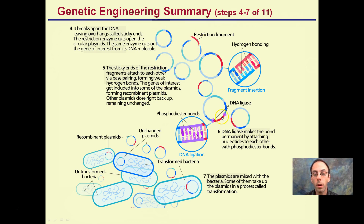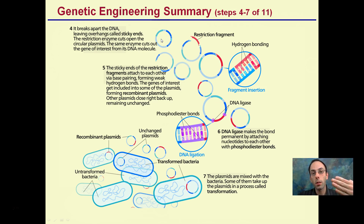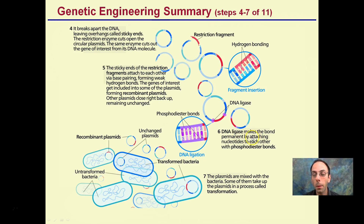The red here indicates the gene of interest. Some plasmids get separated by restriction enzymes and rejoined without taking in the gene of interest. DNA ligase links the bonds together, making them permanent by attaching nucleotides with phosphodiester bonds. These phosphodiester bonds form through ligation, creating a larger plasmid that still retains the circular form of DNA.